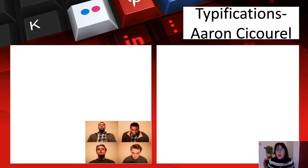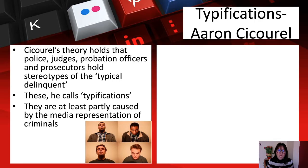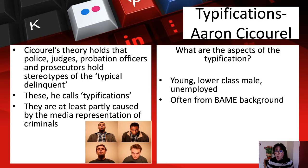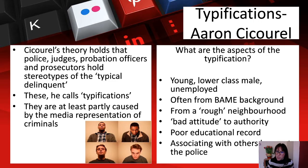Typifications: Aaron Cicourel's theory holds that police, judges, probation officers, and prosecutors hold stereotypes of the typical delinquent, called typifications, which are at least partly caused by media representations of criminals and mugshots. Aspects of a typification include: young, lower-class male, unemployed, often from a BAME background, from a rough neighbourhood, bad attitude to authority, poor educational record, and associated with others known to the police.